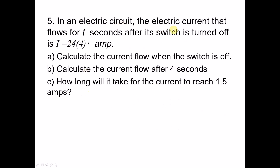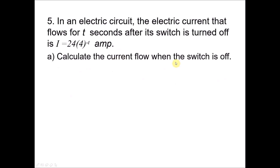Now the last question. In an electric circuit, the electric current that flows for t seconds after the switch is turned off is given by this equation. For part A, calculate the current flow when the switch is first turned off. When the switch is turned off, t equals 0, because the timing starts right at that point. So we substitute t equals 0 into the equation. Since 4 to the power of 0 is 1, we get 24 times 1, which is 24 amperes.